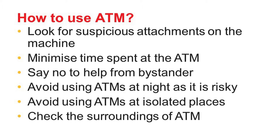How to use an ATM in a secure manner: look for suspicious attachments on the machine. Criminals capture card information through ATM skimming. An attachment (skimmer) will be slightly out of proportion compared to the rest of the machine — slightly bigger and not flush or parallel with other components. So check whether anything looks off or is protruding more than it should.